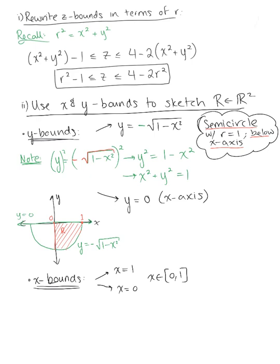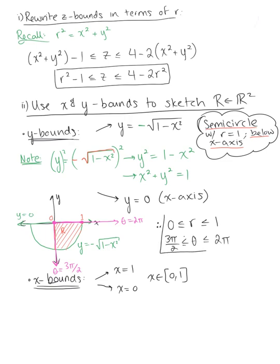We'll use this shaded region to define the bounds for r and θ. The smallest radius is 0 at the origin, and the largest radius is 1, so r ∈ [0, 1]. For θ, looking at the radial arc, we know that's where θ = 3π/2, and it goes all the way to 2π, so θ ∈ [3π/2, 2π]. We now have the bounds for z, r, and θ and are ready to set up the integral.